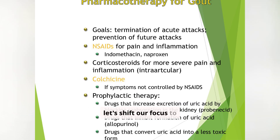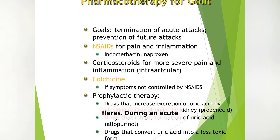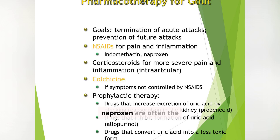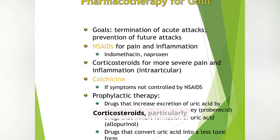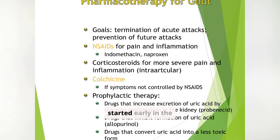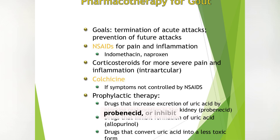Now let's shift our focus to gout. The goals of treatment are twofold: to terminate acute attacks and to prevent future flares. During an acute attack, NSAIDs like indomethacin and naproxen are often the first-line treatment for pain and inflammation. Corticosteroids, particularly intraarticular injections, may be used for more severe pain. Colchicine can also be effective, especially if started early in the attack. For prophylaxis, we use medications that either increase uric acid excretion like probenecid, or inhibit uric acid formation like allopurinol.